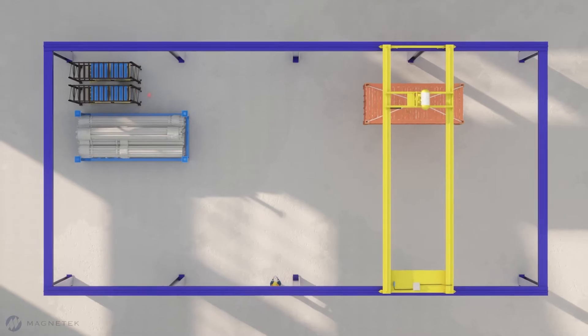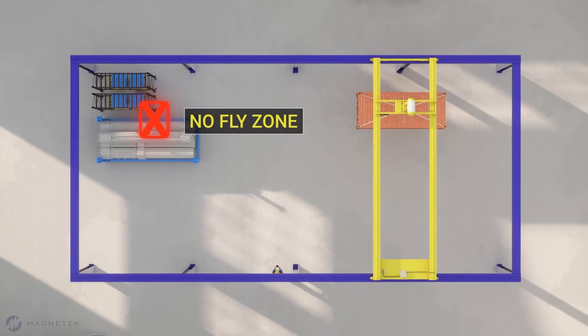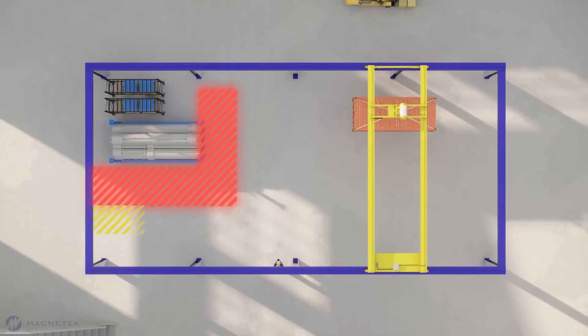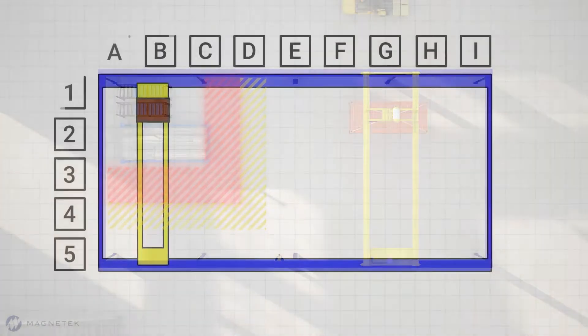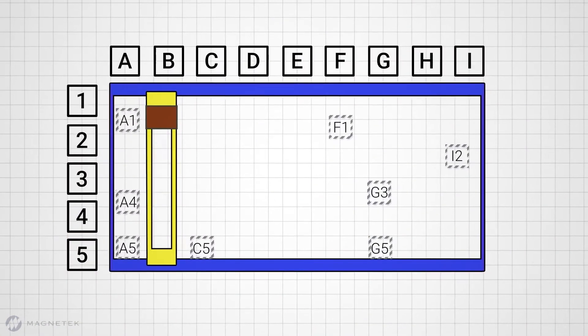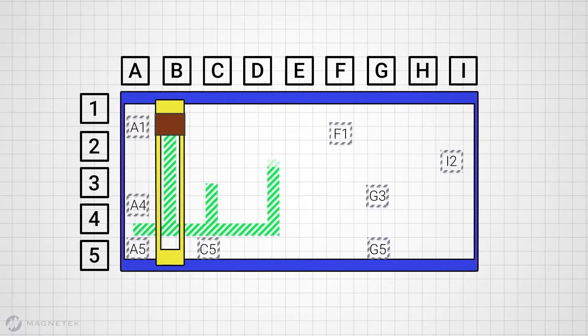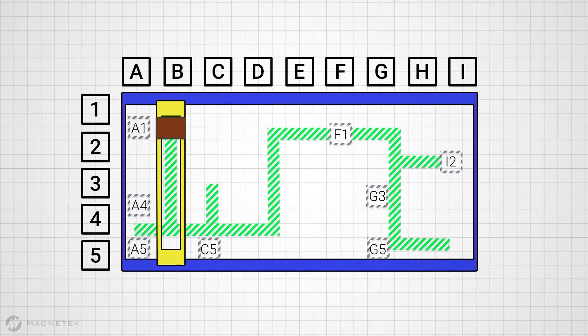No-fly zones refer to protected areas where normal crane operation is limited or entirely restricted. These areas require the need for a digital barrier around a control tower, finished storage, or specific workspaces to avoid.